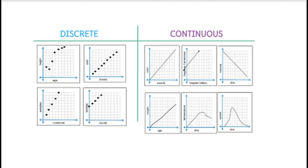Discrete mathematics is the branch of mathematics dealing with objects that can assume only distinct or separate values. Continuous mathematics, on the other hand, contains objects that can vary smoothly — for example, calculus. Like a sine wave diagram, that would be continuous mathematics. And what would be discrete? For example, all the integers — the first five integers would be discrete because every integer is different from one another and separate from each other.